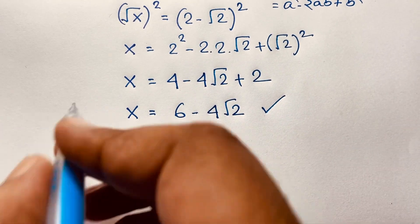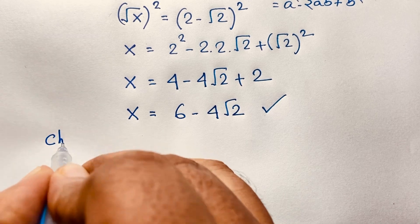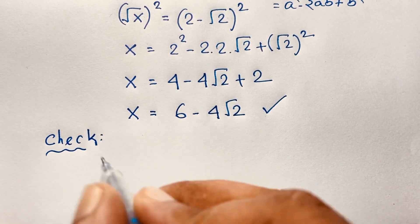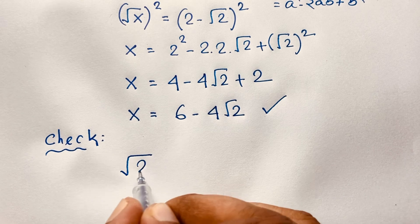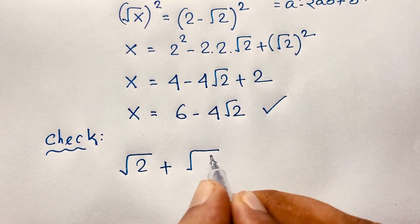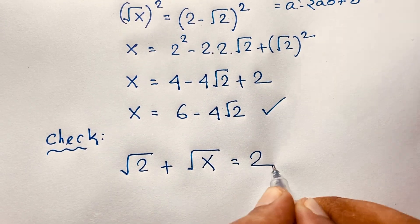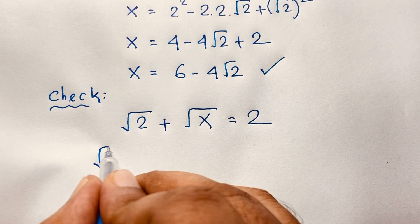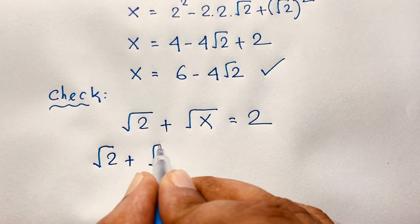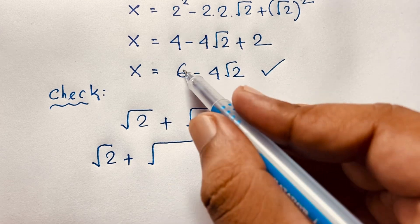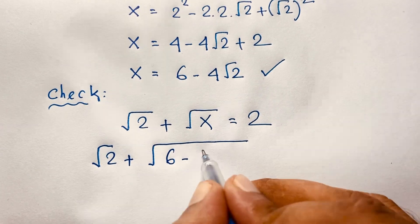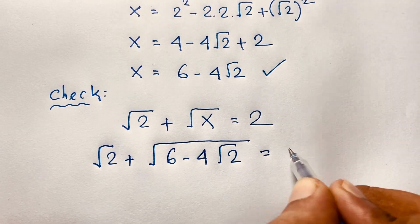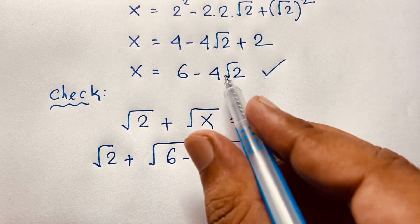So let's verify our question: square root 2 plus square root x is equal to 2. This is our question. Now, square root 2 plus square root x — remember that x equals 6 minus 4 square root 2 — is equal to 2. So let's substitute this value here.